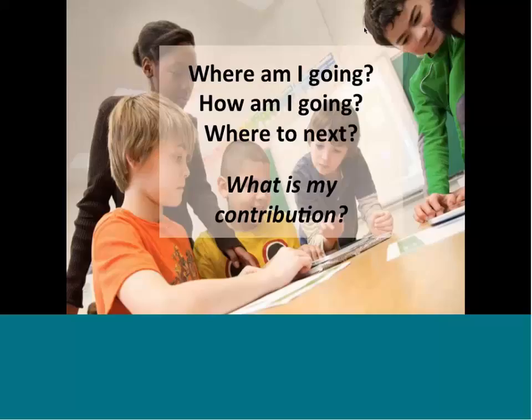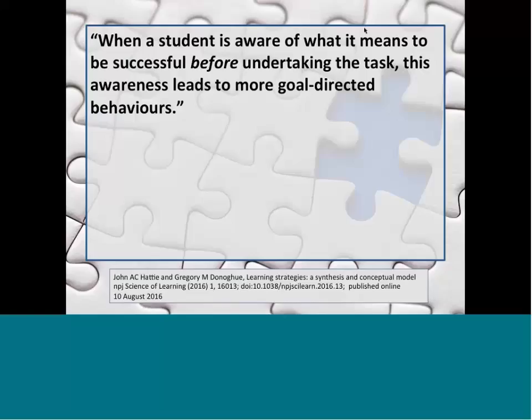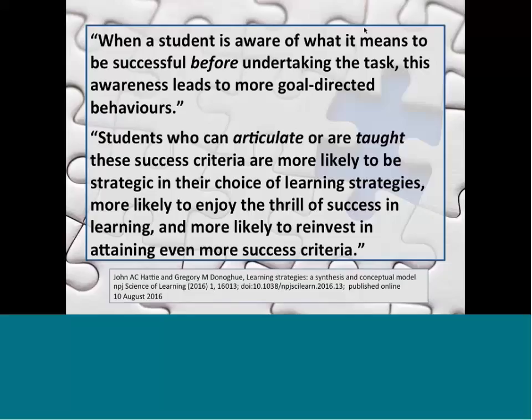There's some new research just out, and this is pretty exciting, on success criteria. Hattie and Donahue published this just in August — their research on learning strategies. What's critical here is that students have the information before undertaking a task, and therefore they can be more goal-directed. The other part they point out is that students who can articulate the success criteria and are explicitly taught the criteria are more likely to be strategic, be thrilled by success, and are more likely to reinvest in attaining even more success criteria — challenging themselves.